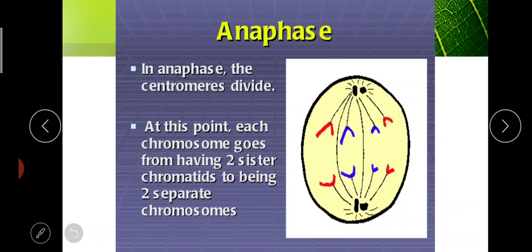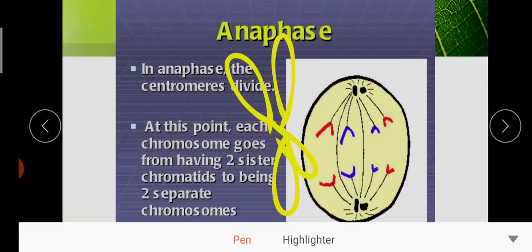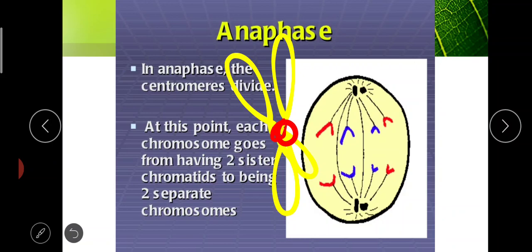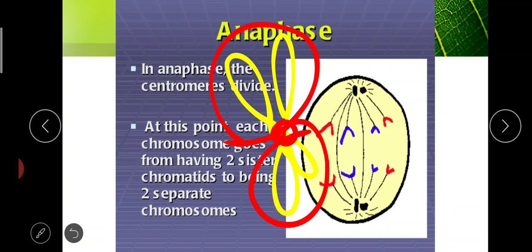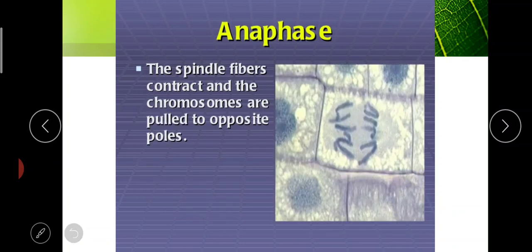Next is anaphase. The centromeres attaching to the chromatids divide, and the daughter chromatids of each chromosome separate and migrate towards the opposite poles. One part goes to one pole and the other part goes to the other pole separately. They get split into two chromatids and arrange at the opposite poles with the help of the spindle fibers.